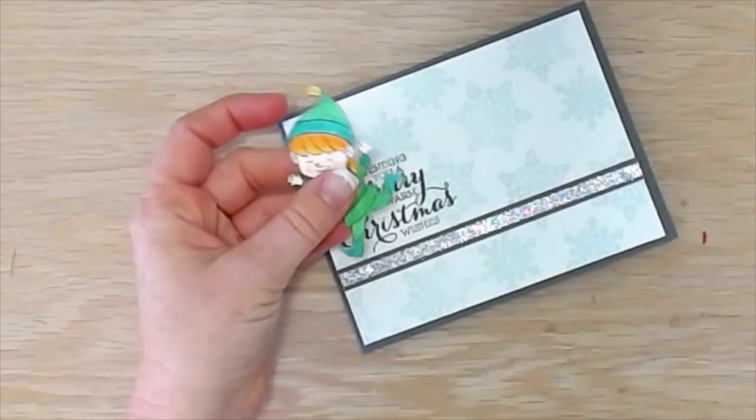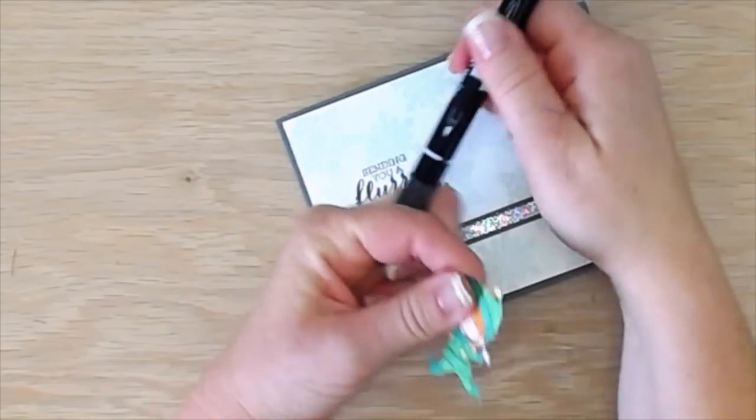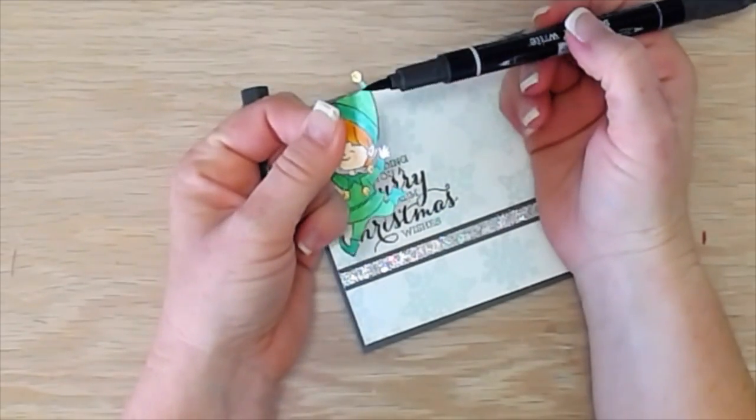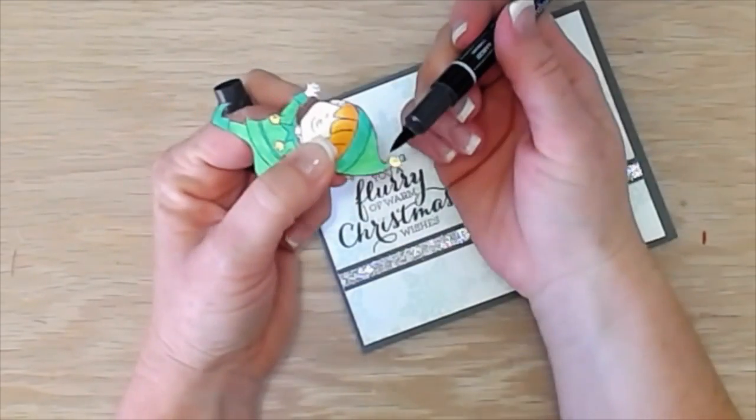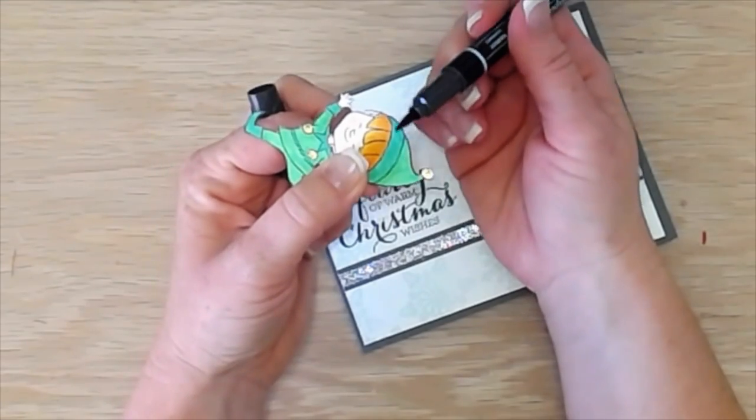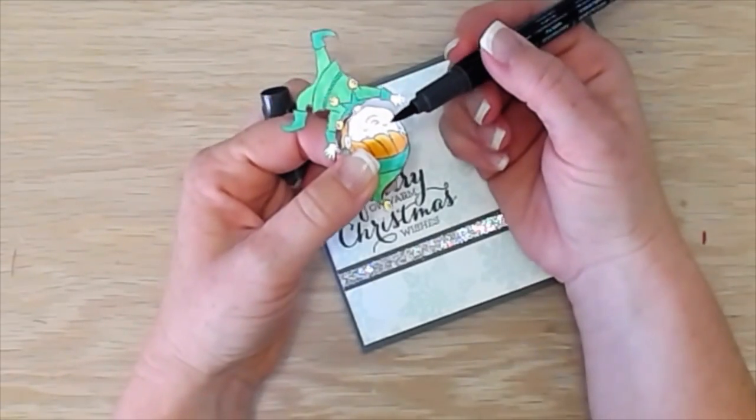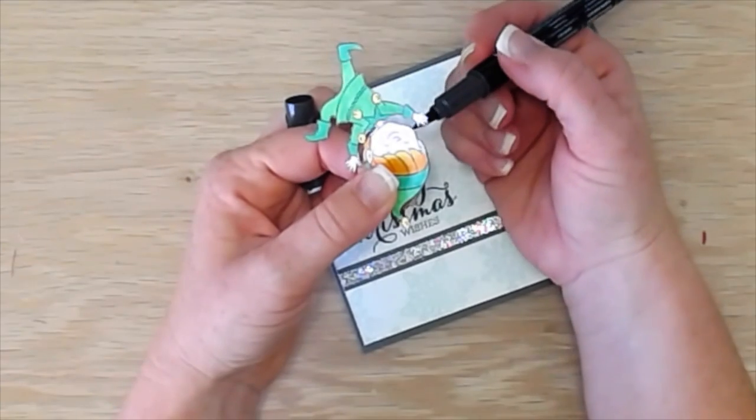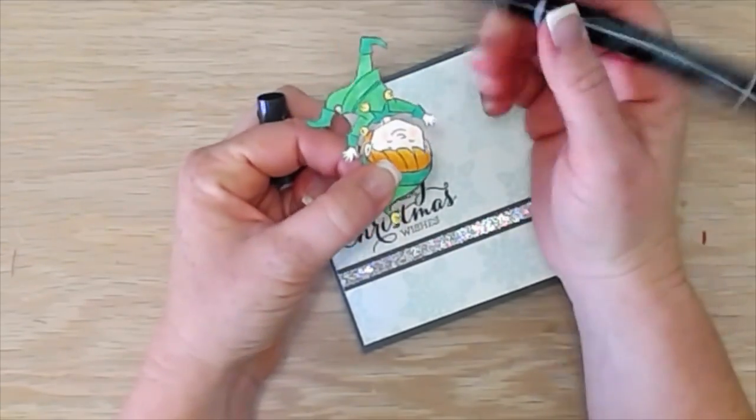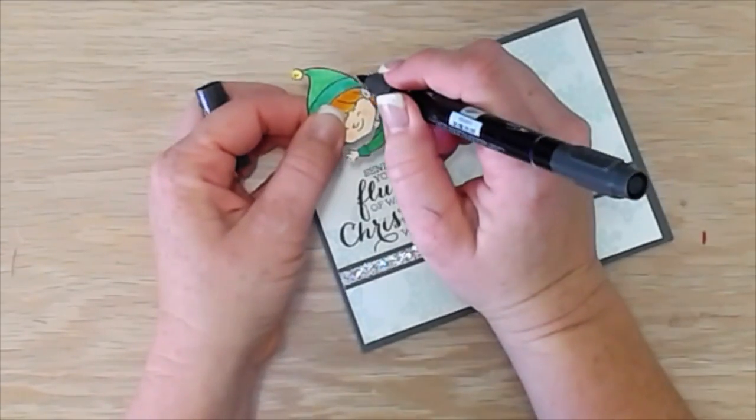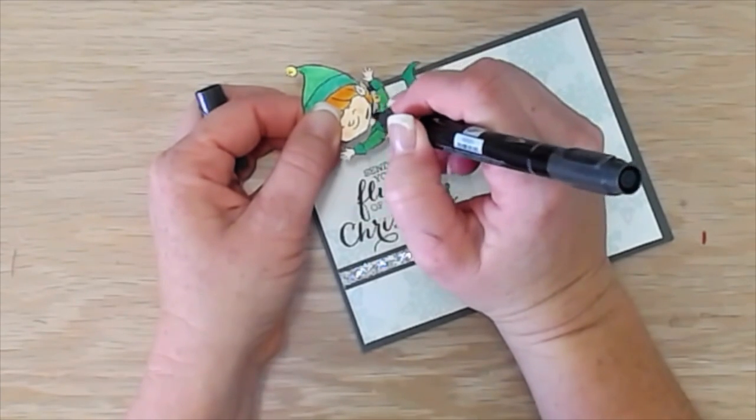Before I add my elf though, I want to take some basic black marker and I'm just going to go around the edges of my elf with this marker. This is a trick I learned from watching Jennifer McGuire and Christina Warner, both super talented people. And it just gives a really nice thin edge.